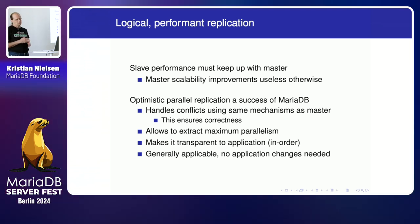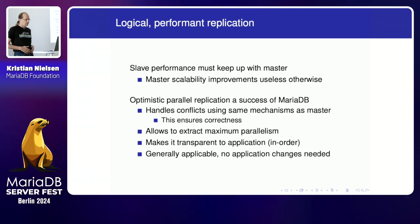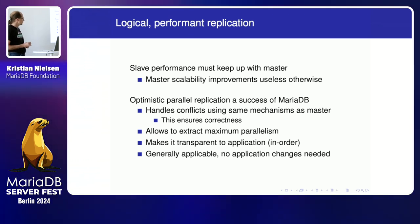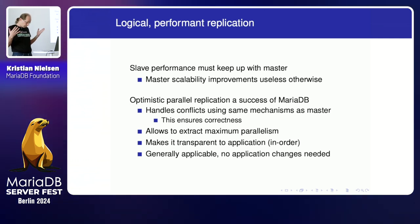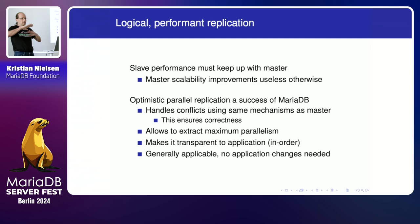MariaDB has since 10.1 the optimistic parallel application, and I think that's really a big success. In the old days replication was single-threaded — you applied one query after the other. At some point this doesn't work anymore as cores increase and the master gets faster, causing slave lag. There are different ways to solve it. The classic way is to analyze transactions and determine which are non-overlapping so you can run them in parallel. But there are so many corner cases.